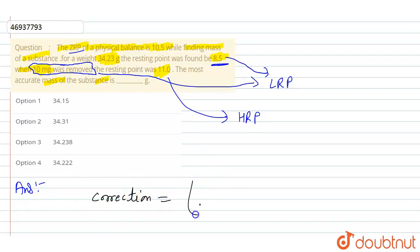The correction is equal to ZRP minus LRP, that is zero resting point minus lower resting point, divided by higher resting point minus lower resting point, into mass removed.